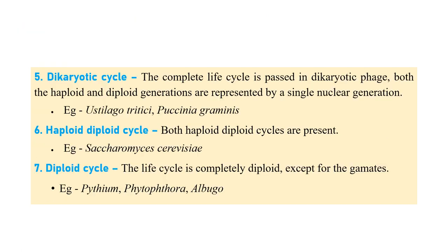In the dikaryotic cycle, the entire life cycle passes through the dikaryotic phase only. Diploid means 2n; dikaryotic means n+n. Both haploid and diploid generations are represented in a single nuclear generation that occurs in the dikaryotic phase. The immediate products of meiosis — ascospores and basidiospores — fuse immediately to form a dikaryon, and this dikaryotic phase continues throughout the life cycle. This is generally observed in some yeasts and smut fungi like Ustilago, Erysiphe graminis, and rust fungi.